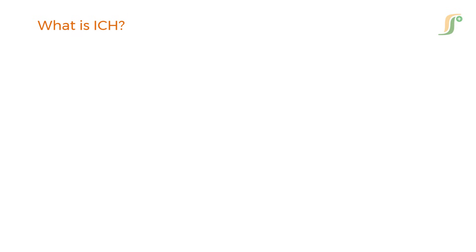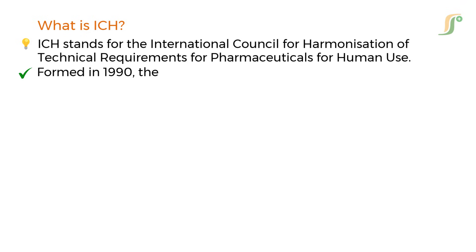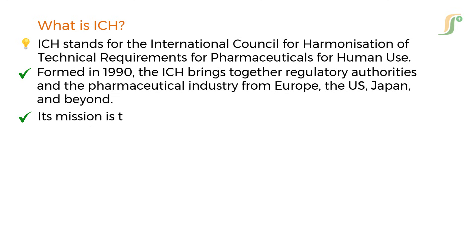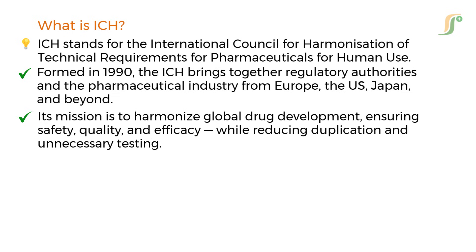ICH stands for the International Council for Harmonization of Technical Requirements for Pharmaceuticals for Human Use. Formed in 1990, the ICH brings together regulatory authorities and the pharmaceutical industry from Europe, the U.S., Japan, and beyond. Its mission is to harmonize global drug development, ensuring safety, quality, and efficacy, while reducing duplication and unnecessary testing.